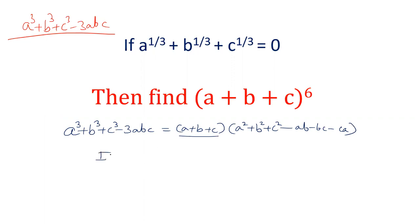If this term is 0, that is a+b+c=0, then the left hand side will become 0. So, the value of right hand side a³+b³+c³-3abc becomes 0 and that gives us a³+b³+c³ equals 3abc.